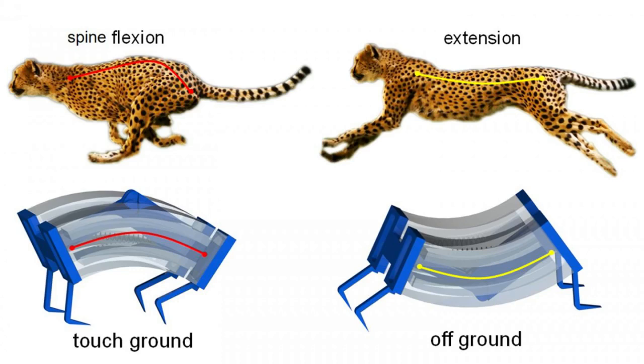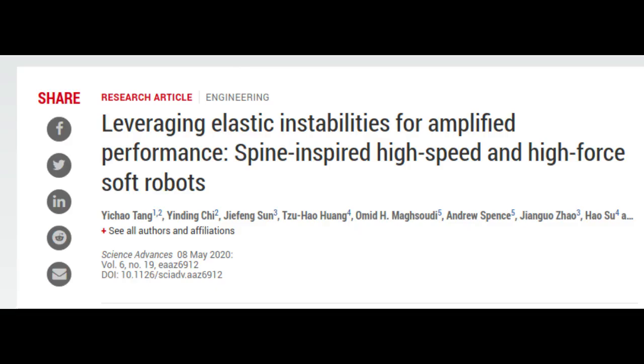Cheetahs are the fastest creatures on land, and they derive their speed and power from the flexing of their spine. The researchers from North Carolina State University were inspired by the cheetah to create a type of soft robot that has a spring-powered bistable spine, meaning that the robot has two stable states.